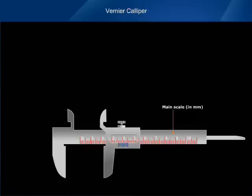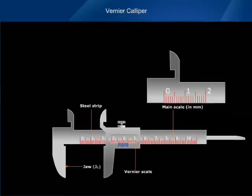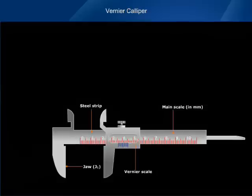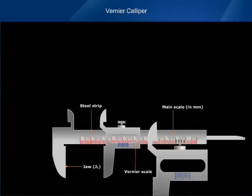The vernier caliper consists of a long steel strip with a jaw J1 at one end. The strip is graduated in millimeter and is known as the main scale. There is another graduated movable steel strip with a jaw J2 that can slide over the main scale.